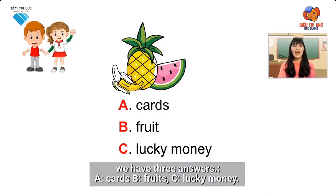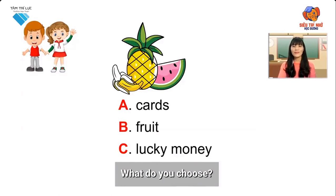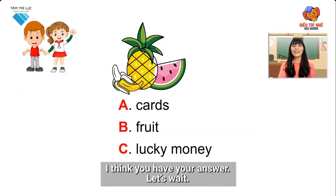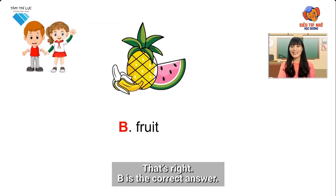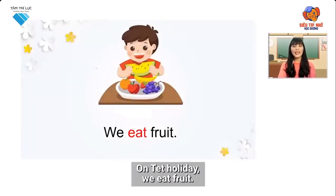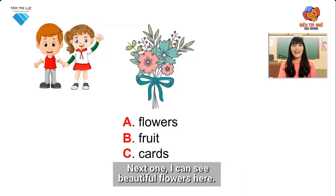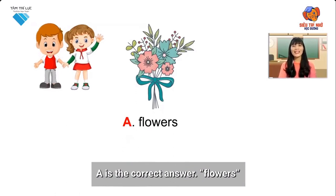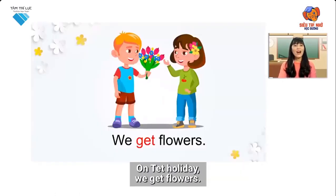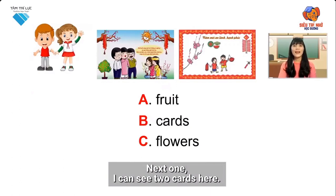Next one — we have three answers: A) cards, B) fruits, C) lucky money. Which one do you choose? That's right! B is the correct answer. On Tet holiday, we eat fruit. The next one — I can see beautiful flowers here. What is the correct answer: A, B, or C? That's right! A is the correct answer — flowers. On Tet holiday, we get flowers.